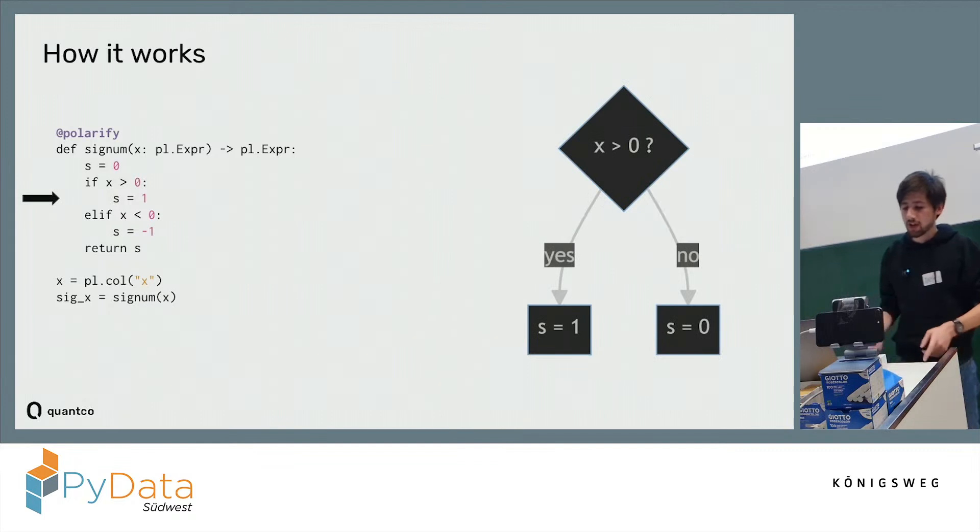Then we go on to the first conditional statement. We note down that if X has been larger than 0, S will be assigned to 1, and if it's not the case, S will still remain at 0.